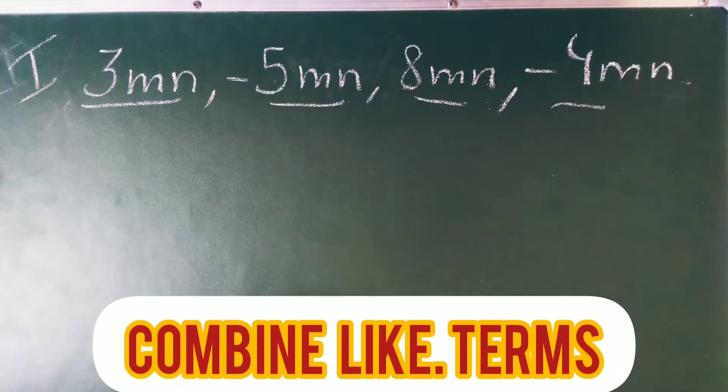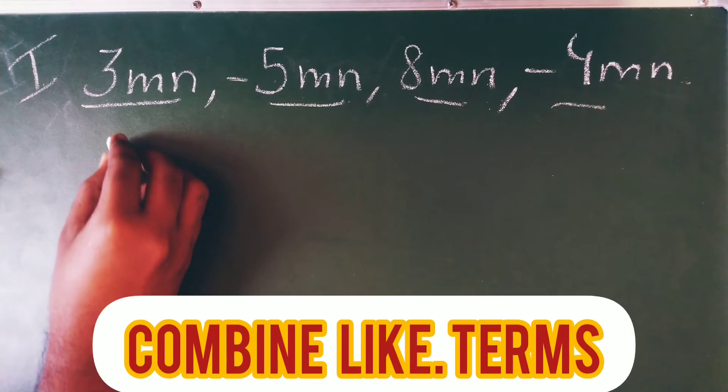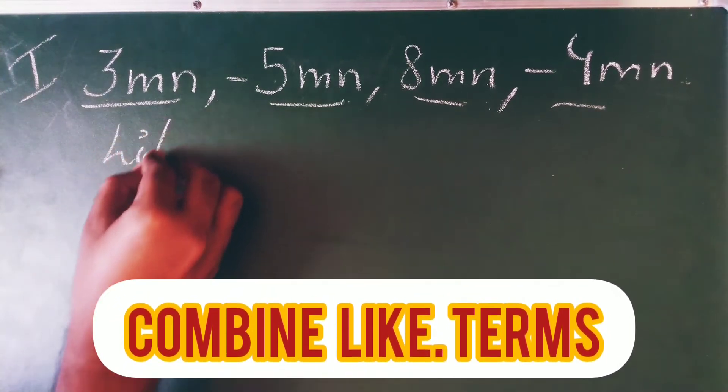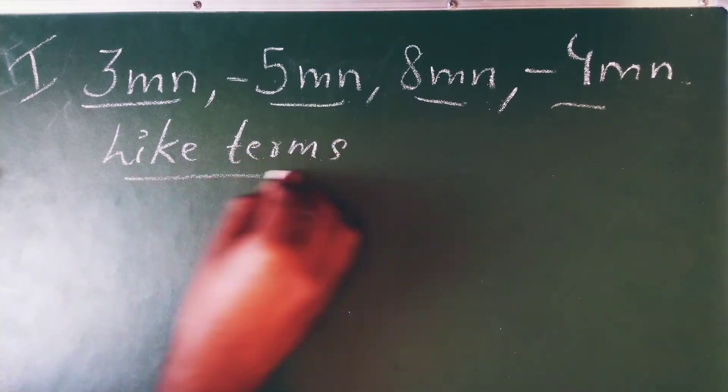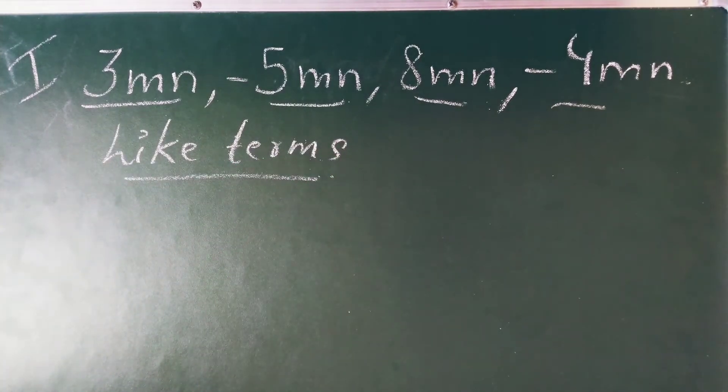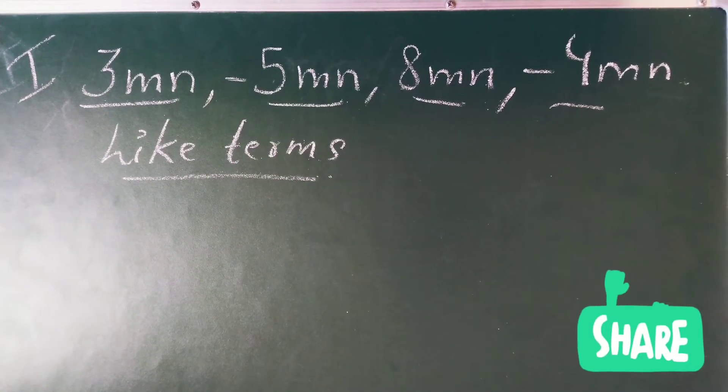We have to add all these terms. Now you have to add, always remember, you have to add only the like terms. You can add only the like terms. Unlike terms cannot be added but can be multiplied.